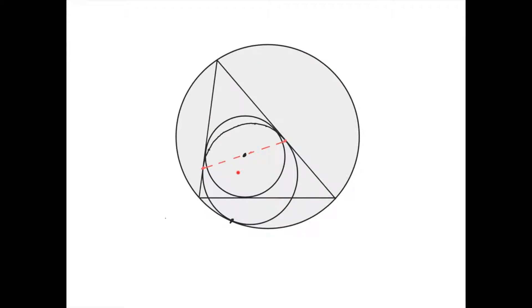There exist two more mixtilinear incircles, one here and one here. We call it an incircle because it is internally tangent to the circumcircle, but there also exist mixtilinear excircles.